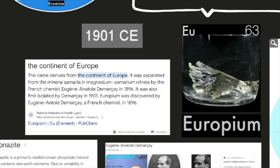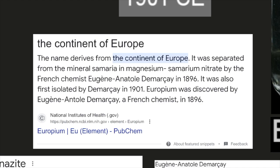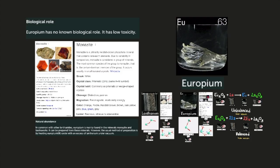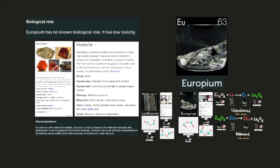Europium is named after the continent of Europe. The name derives from the continent of Europe. It was separated from the mineral samaria in magnesium samarium nitrate by the French chemist Eugène Anatole de Marquet in 1896. It was also first isolated by de Marquet in 1901. Europium was discovered by Eugène Anatole de Marquet, a French chemist in 1896, according to National Institutes of Health, pubchem.ncbi.nlm.nih.gov, element europium.